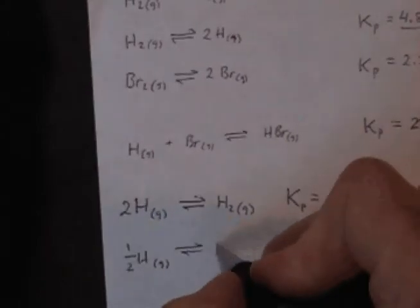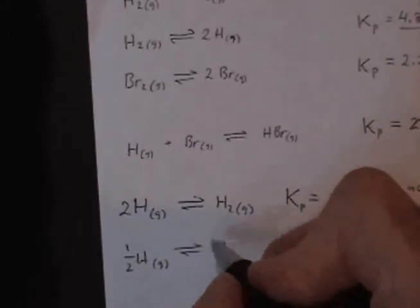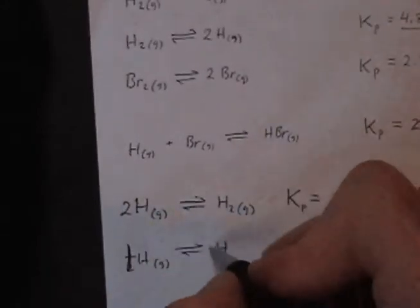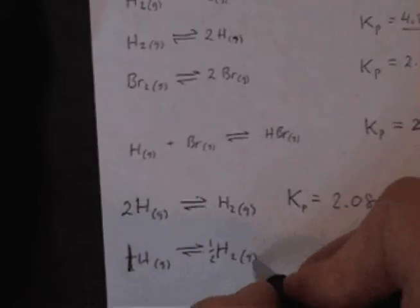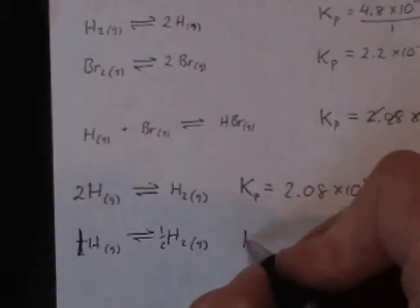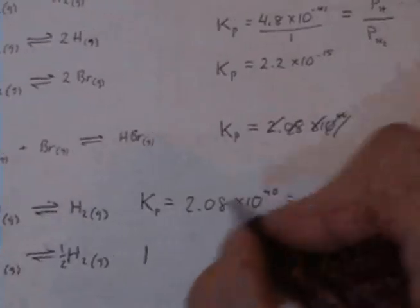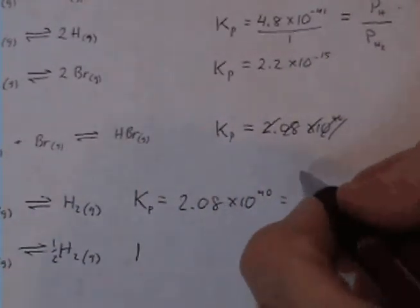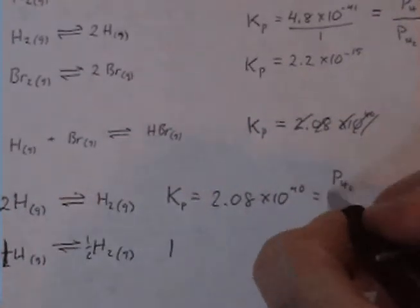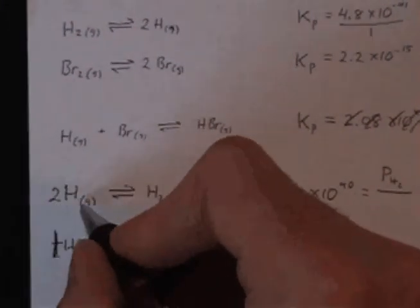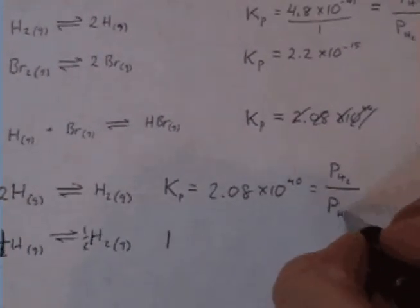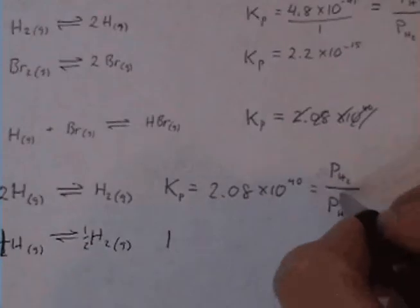Okay, let's go ahead and write the K expression for each of these. And what am I doing here? This will be one and here will be one half H2. Okay, so my Kp here is equal to the pressure of hydrogen gas divided by the pressure of the hydrogen atoms squared.